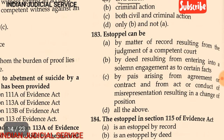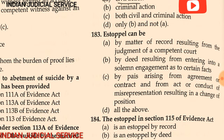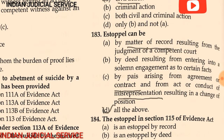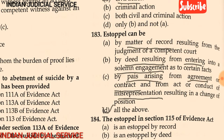Question 183: Estoppel can be — (A) by matter of record, resulting from the judgment of a competent court; (B) by deed, resulting from entering into some solemn engagement as to a certain fact; (C) by pais, arising from agreement or conduct and from act or conduct of misrepresentation resulting in a change of position; (D) all of the above. The answer is all of the above.